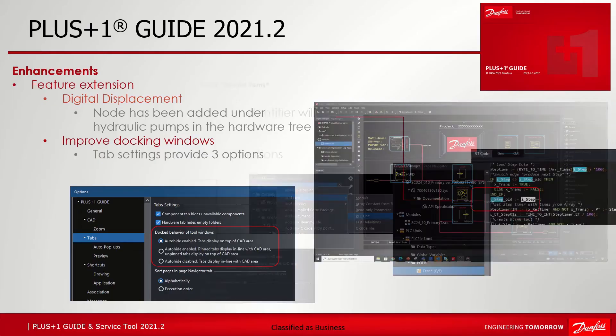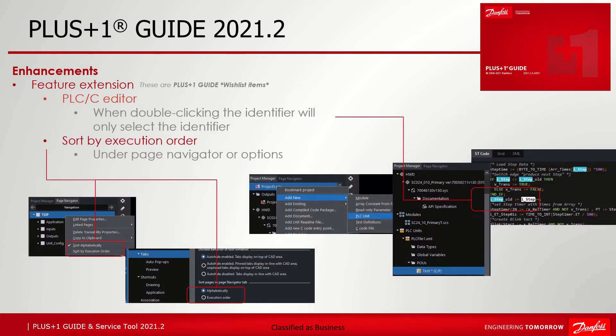Another small feature extension took place in the PLCC editor. Up to now, when you select text in the PLCC editor it will select operators after the identifier word. In this example, when clicking on the variable ISTEP, only ISTEP will be selected and not ISTEP and the operators plus plus.